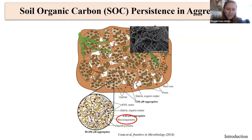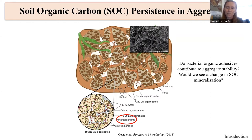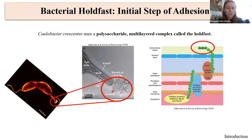But what about bacteria? Do bacterial cells produce organic adhesives that contribute to aggregate stability? And if so, would we see a change in soil organic carbon mineralization rates depending on whether the bacterial adhesive is present or not? To investigate these questions, I found that the initial irreversible step of adhesion for many bacteria is through the production of a multi-layered polysaccharide complex called the holdfast.